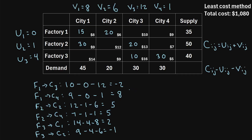Once we've calculated these differences for all of the unallocated cells, we look at these values and ask: are any of them negative? We see that two values are negative. If there is at least one negative value, we have not reached an optimal solution. We look at all these values and take the most negative one, which is negative 2, from factory 1 to city 3.